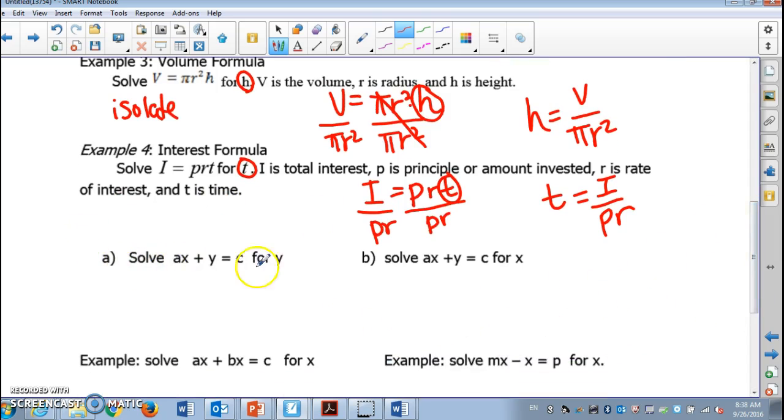Next one is a little tricky because now we have more than one operation. Solve AX plus Y equals C for Y. We're gonna solve this equation for Y. What does that mean? We are going to isolate Y.